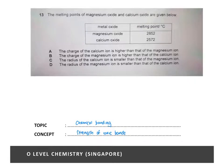This question is on the topic of chemical bonding, and the concept being tested is the strength of ionic bonds. Strictly speaking, this question is beyond the syllabus of O levels — the factors affecting strength of ionic bonds will only be taught at A levels. You are given the melting points of magnesium oxide and calcium oxide, both of which are ionic compounds. Melting point, being a physical property, will depend on the structure and bonding.